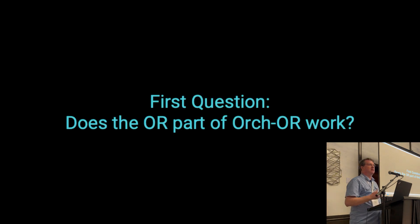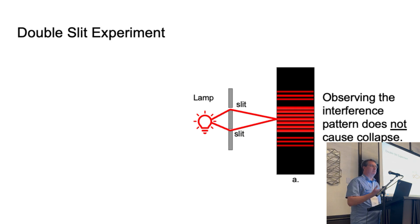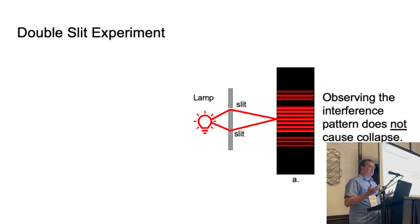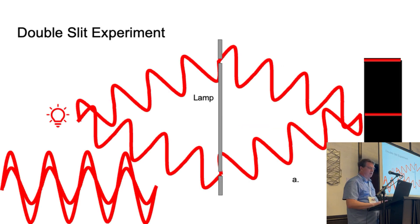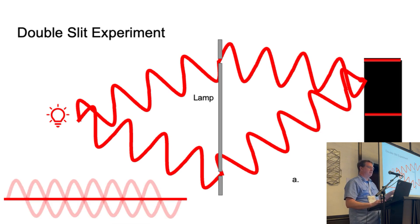The first question is: does the objective reduction part of Orch-OR work? We all know the double slit experiment. You take a lamp, put it through two slits, and you get an interference pattern. That's because light has this wave property. When the waves all line up, you get bright light. And if the waves are out of phase, they sum to zero and you get a dark patch. So you get this pattern.